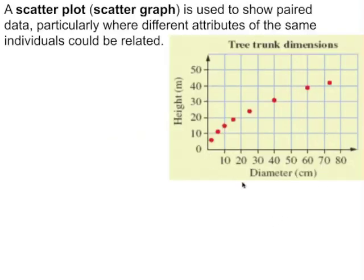The next type of display that I'm going to demonstrate is a scatter plot. Scatter plots are used for bivariate data when we have two variables. In this case the height and the diameter of some tree trunks. So each dot here represents a tree trunk. And we're looking to see if there's a relationship between these two variables.